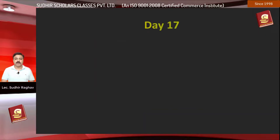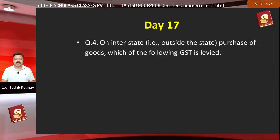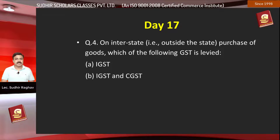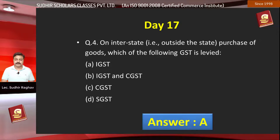Question number 4: On interstate purchase of goods, which of the following GST is applied? Option A, IGST; Option B, IGST and CGST; Option C, CGST; Option D, SGST. The right answer is option A.